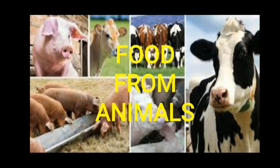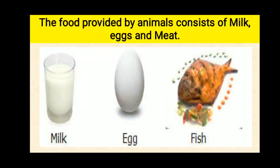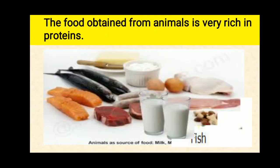Though we get most of our food from crop plants, animals also provide us food. The food provided by animals consists of milk, eggs and meat. The food obtained from animals is very rich in proteins. In fact, animal food provides certain proteins which are not present in plant foods. Most of the food obtained from animals also contains a good amount of fat but it contains very little of carbohydrates.